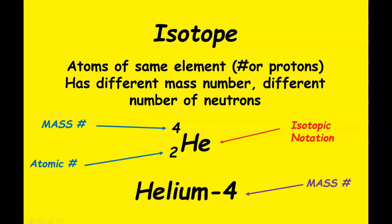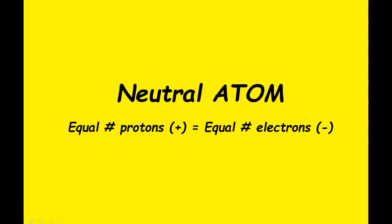An isotope is an atom that has the same number of protons but a different mass number, meaning a different number of neutrons. There are two ways isotopes are identified: isotopic notation using the chemical symbol with the mass number and atomic number, and the element name with a number after it — that number is always the mass number, never the atomic number, because the element's name already tells you the atomic number. This is one of the most difficult things for students to remember.